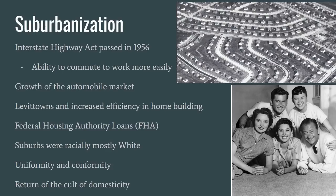Moving to domestic concerns — suburbanization occurred over the entirety of Period 8, influenced by several developments. First, the Interstate Highway Act, passed primarily for national defense, had a huge influence on suburbs, as people could commute greater distances more efficiently and move out of cities. The post-World War II automobile industry also rebounded and expanded. Another major factor was William Levitt, who applied assembly line and economies of scale principles to housing construction, aided by FHA loans, allowing many middle-class families to purchase suburban homes. These suburbs, though, were racially mostly white — some even had specific rules against minorities. The physical uniformity of suburban homes went along with a push for conformity and the return of traditional family values like the cult of domesticity.